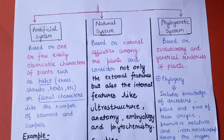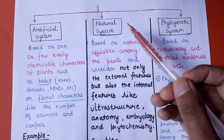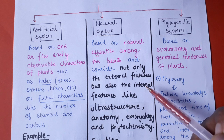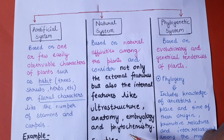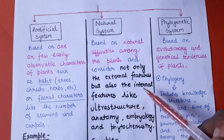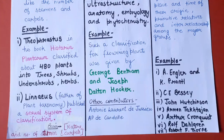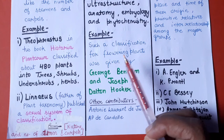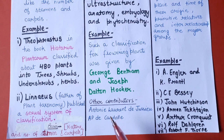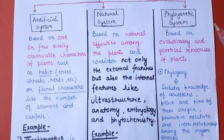Now let's talk about our second system — the Natural System of Classification. This system is based on natural affinities, and it does not include only external features. It has also included internal features such as ultrastructure, anatomy, embryology, and phytochemistry. The best example is Bentham and Hooker's System of Classification, which is a widely accepted classification. Other contributors to the natural system include de Candolle and Anthony Lauren.